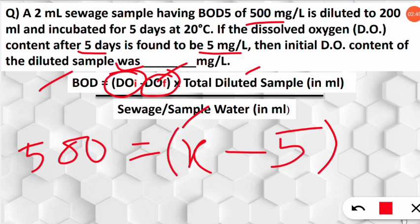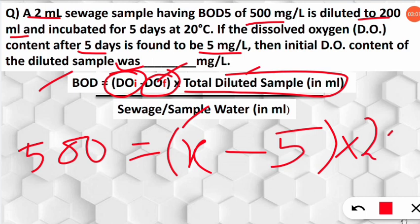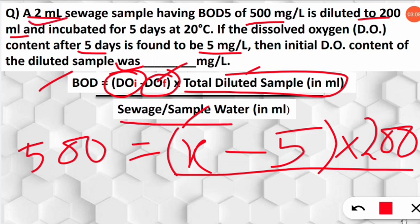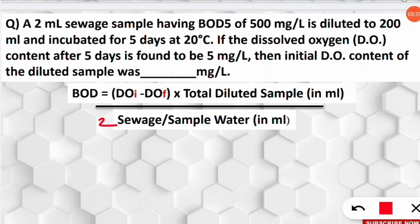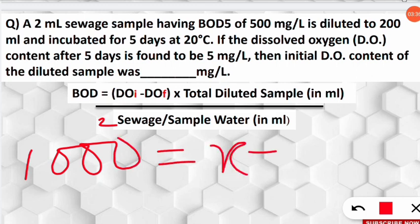We place the values in brackets: (X − 5) multiplied by the total diluted sample of 200 ml, then divide by the sewage water taken, which is 2 ml. Solving this: 500 multiplied by 2 gives 1000 on the left-hand side, which equals (X − 5) × 200.